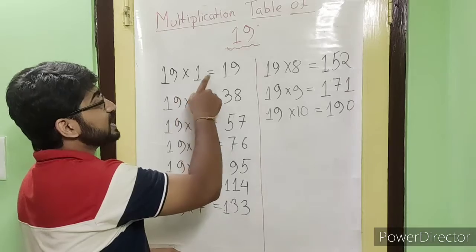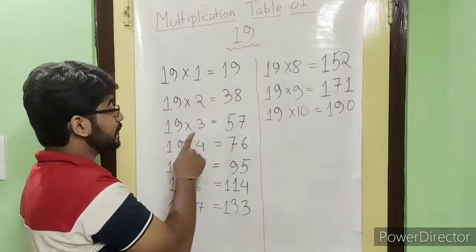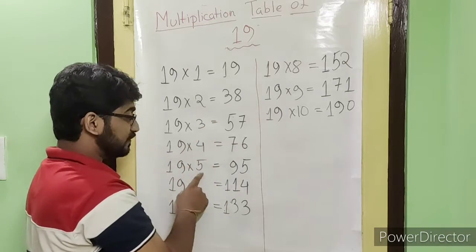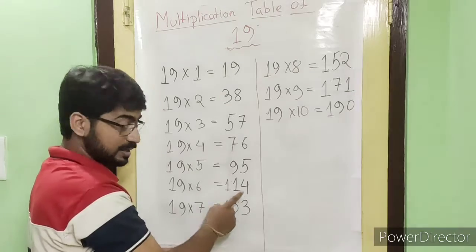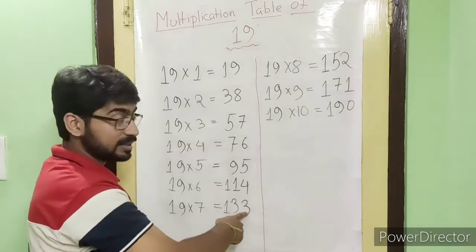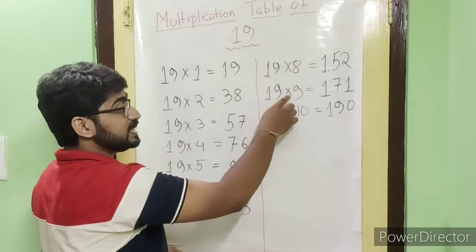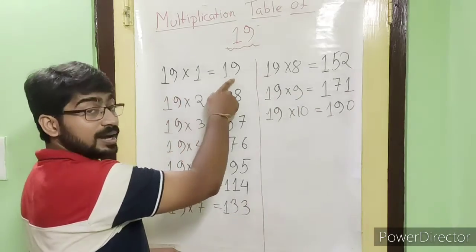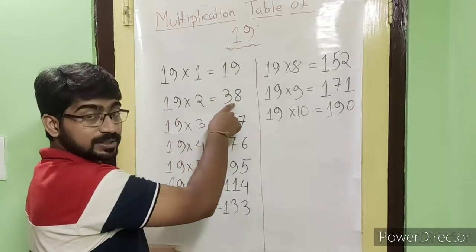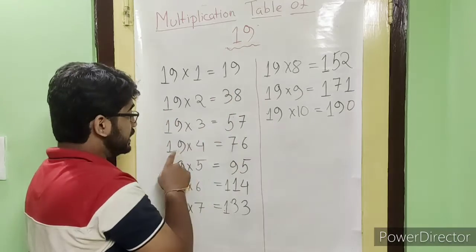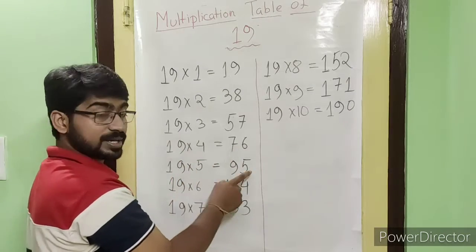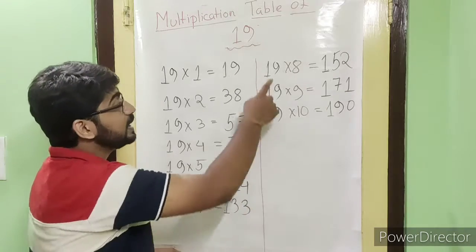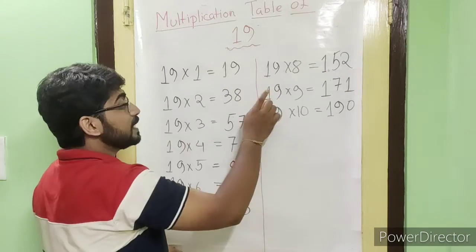19 ones are, 19 twos are, 19 threes are, 19 fours are, 19 fives are, 19 sixes are, 19 sevens are, 19 eights are, 19 nines are, 19 tens are.